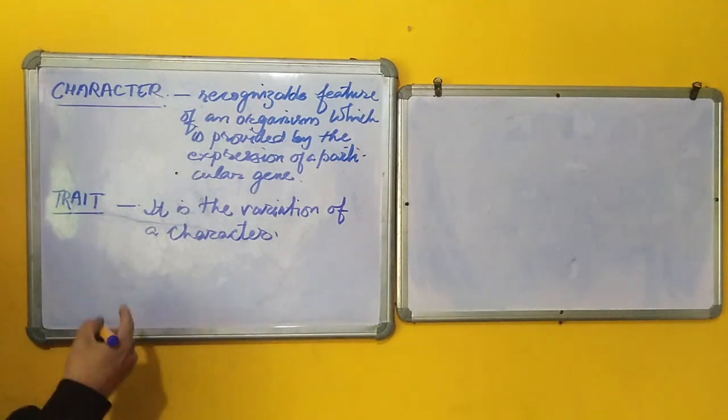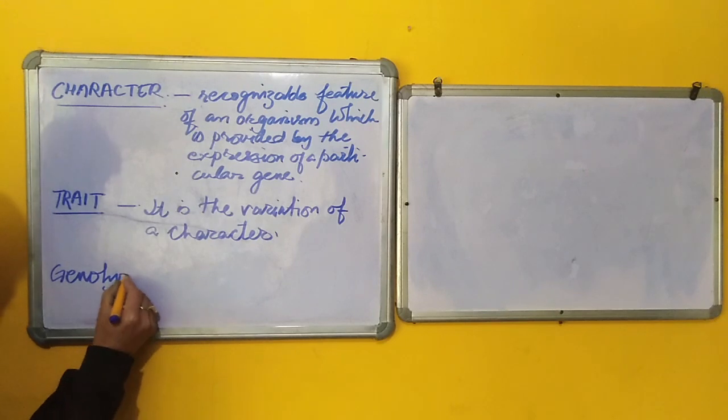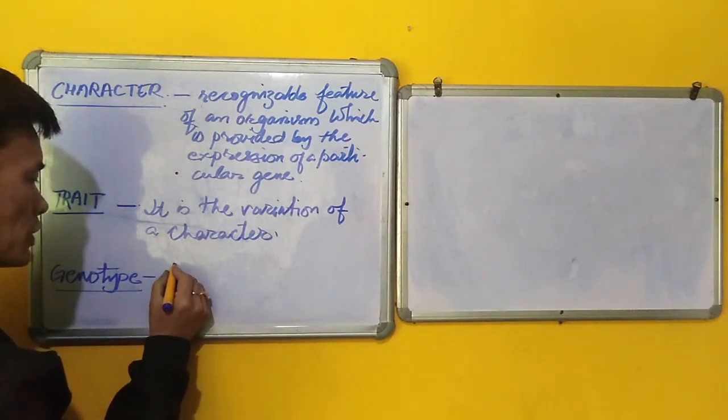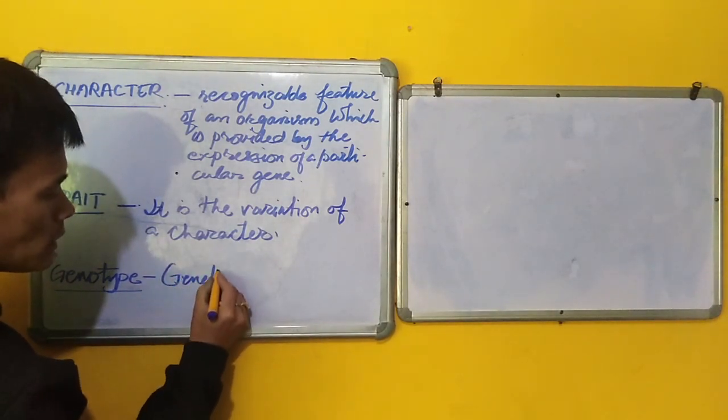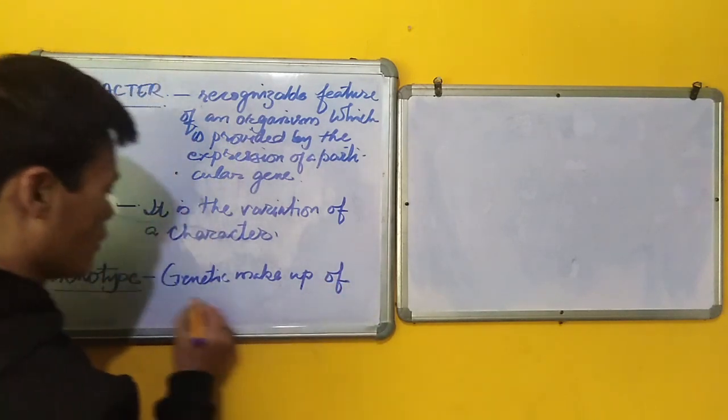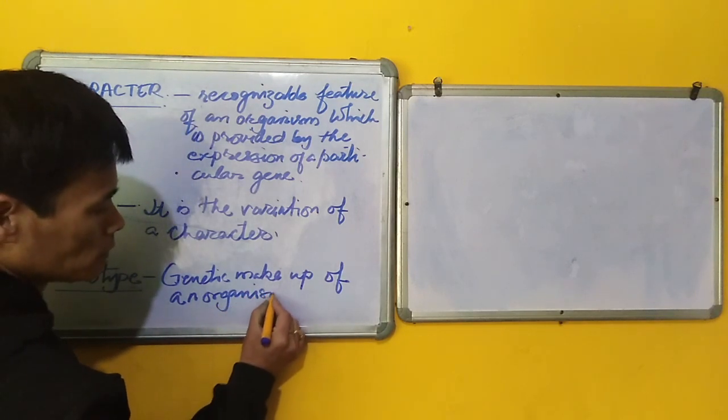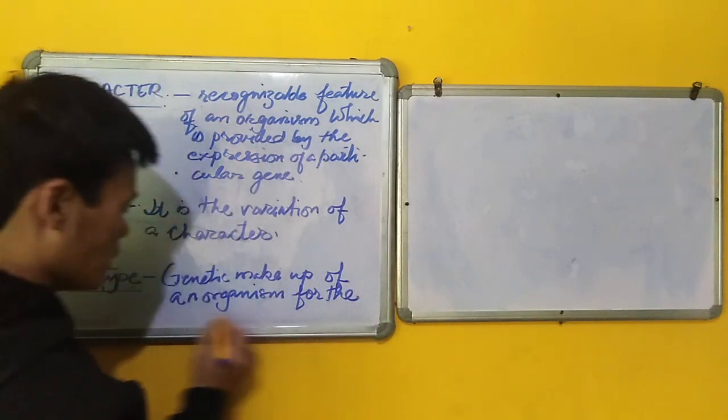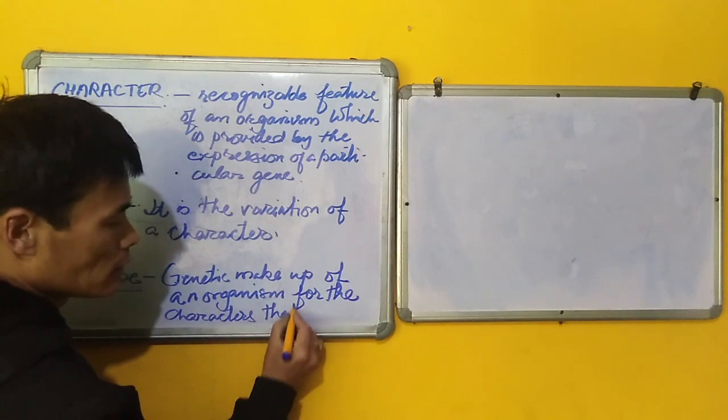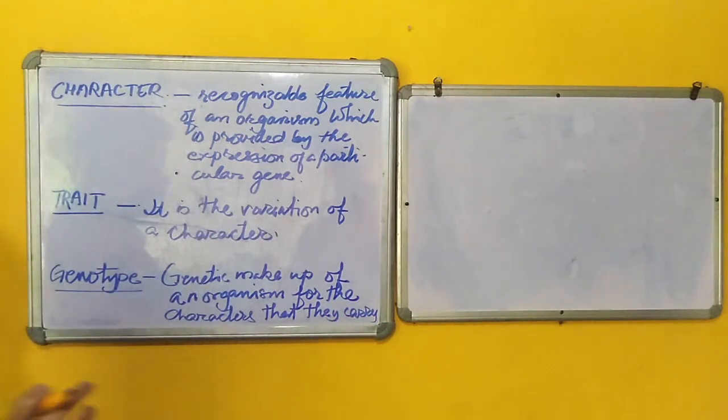As of now, we will move on to the next term, genotype. Genotype refers to the genetic makeup of an organism. Genotype is the genetic makeup for the characters that they carry.